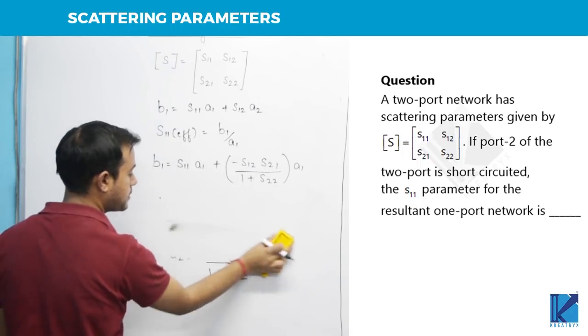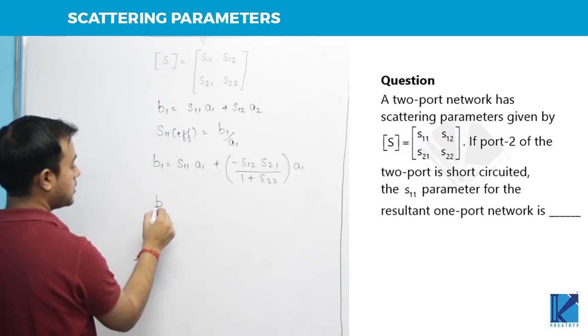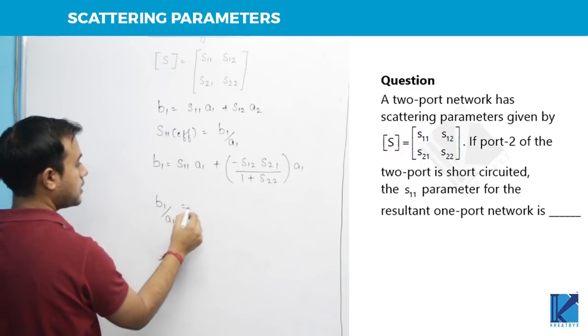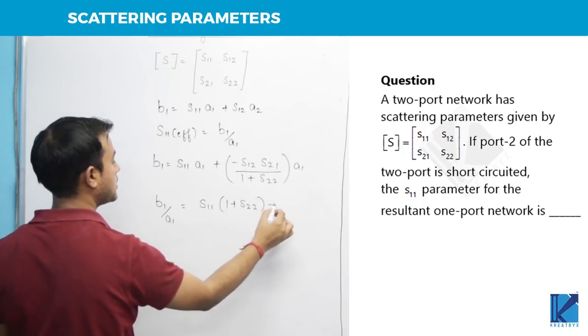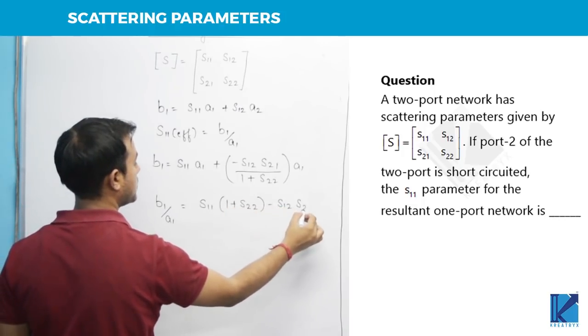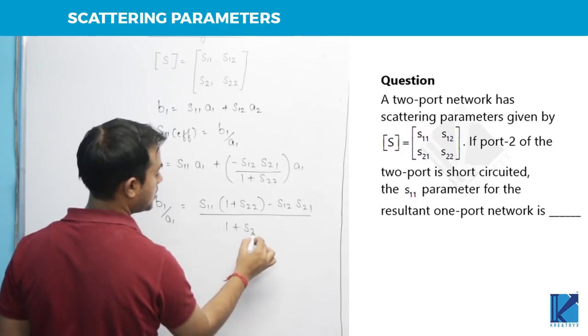So now if we simplify this expression, we can say that B1 by A1 is actually S11 times 1 plus S22 minus S12 S21, all divided by 1 plus S22.